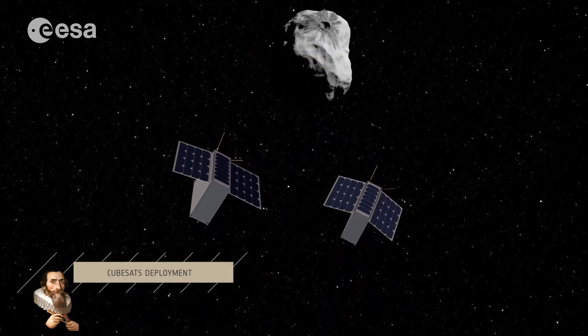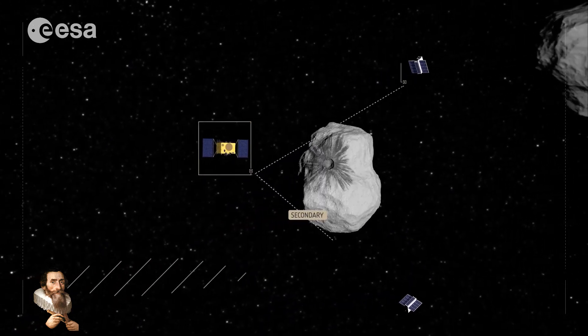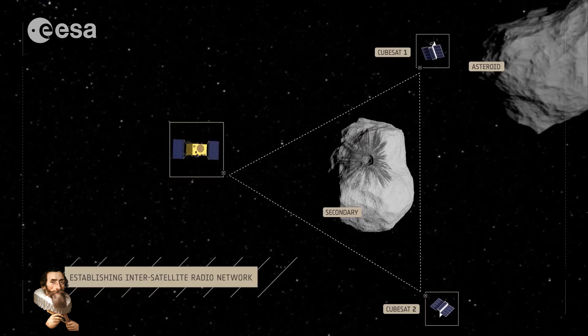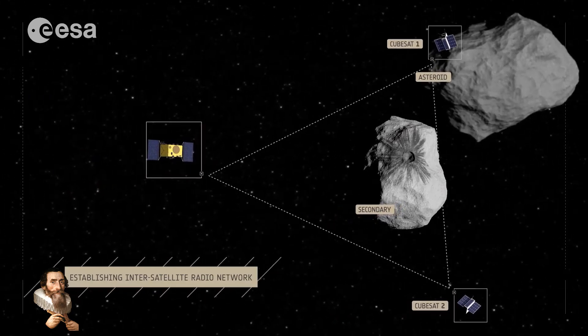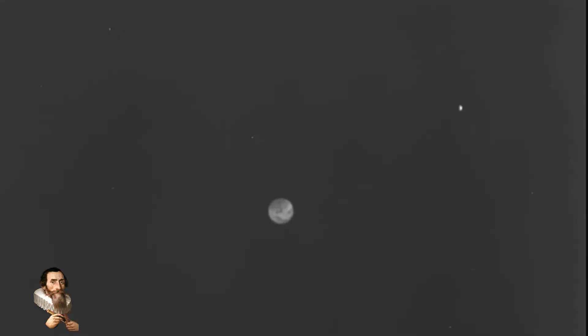While HERA's primary focus is on the Didymos-Dimorphos system, the spacecraft's journey through space has provided opportunities to capture stunning and sometimes haunting images of planet Earth. HERA captured images taken from the vantage point of deep space, and these images offer a unique perspective on our planet, highlighting its beauty and fragility.